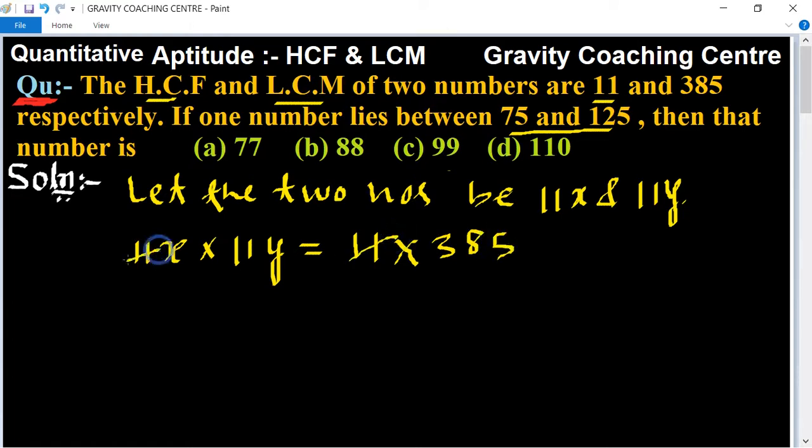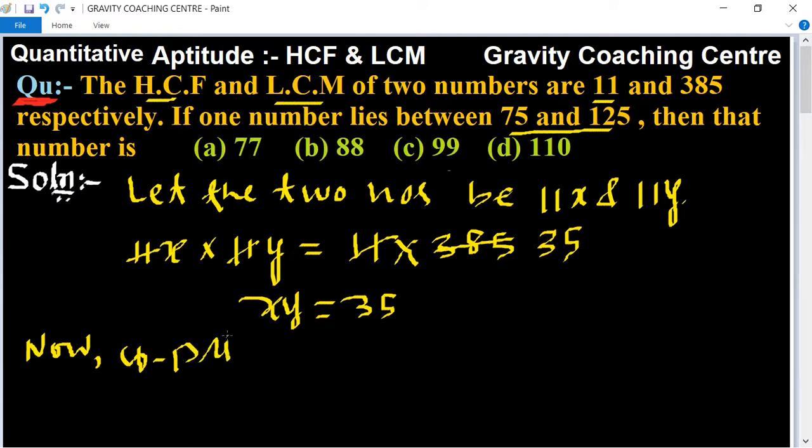So now, we find co-prime pairs with the product 35.